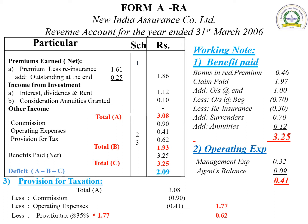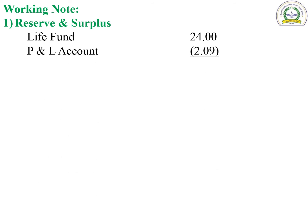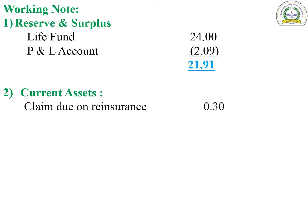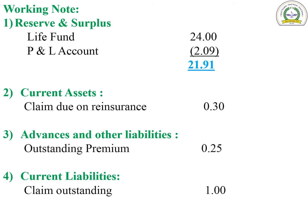Now for the balance sheet, we prepare the working notes. Reserves and surplus: life fund 24 (from trial balance), less deficit 2.09 calculated in revenue account — final reserves and surplus is 21.91. Current assets: claims due on reinsurance 0.30 (from adjustment). Advances and other assets: outstanding premium 0.25 (from adjustment). Current liabilities: claims outstanding at the end 1.00 (from adjustment).